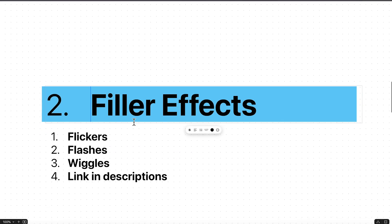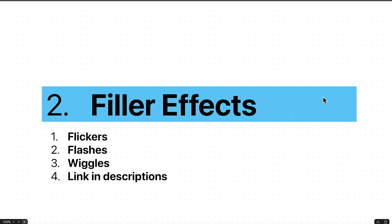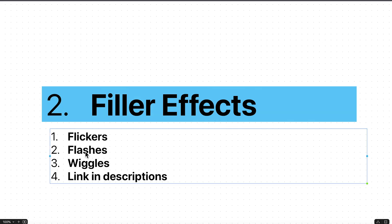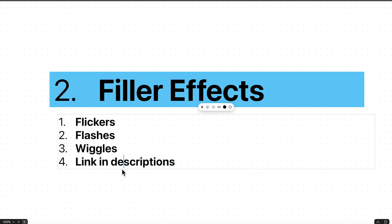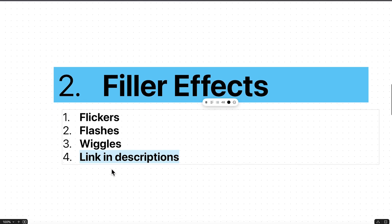The second point is filler effects. This is self-explanatory: flickers, flashes, and wiggles. I'll link our full video on filler effects in the description. Filler effects really help you get through the boring parts of a song. In a music video there will be verse sections — what I like to do in verses is just use filler effects like flickers, wiggles, and flashes. Even in the intro and outro, you don't have to do much VFX; just use flickers, flashes, and wiggles together to add something without spending extra time.